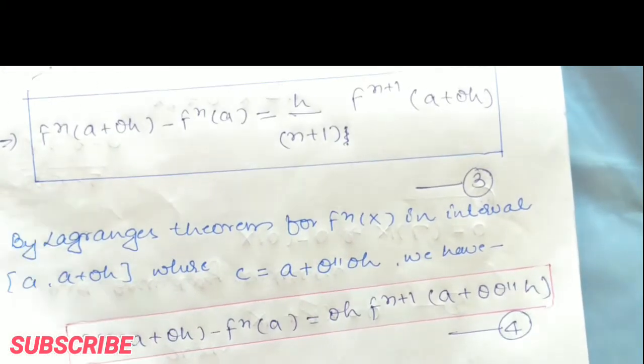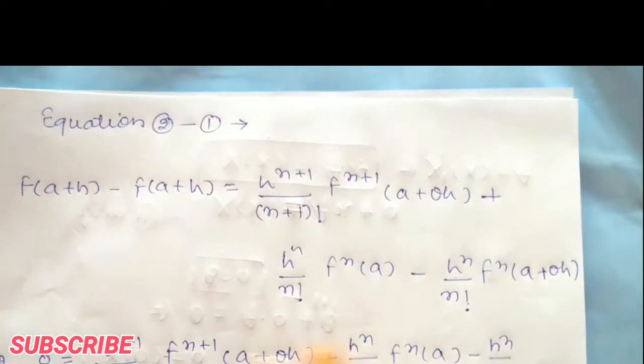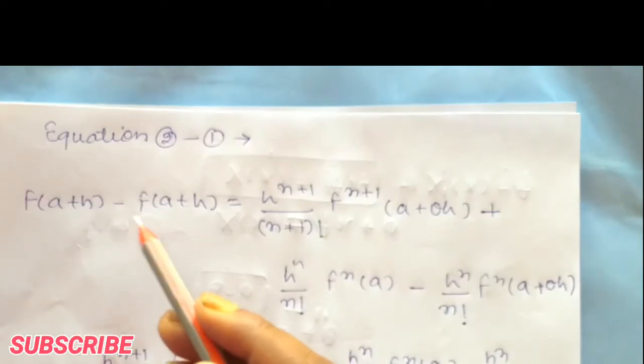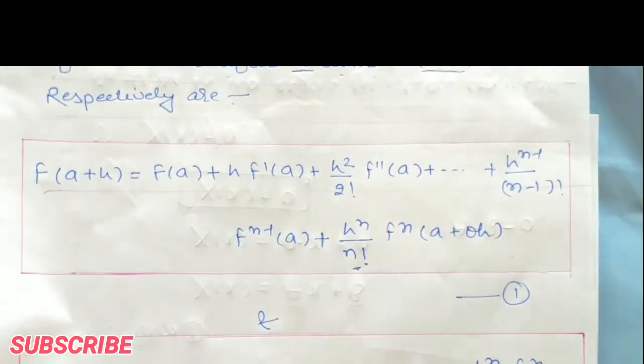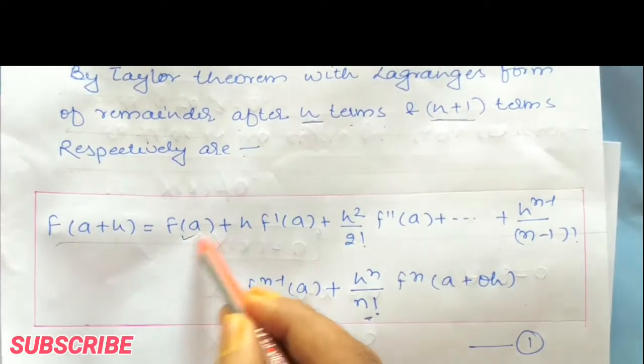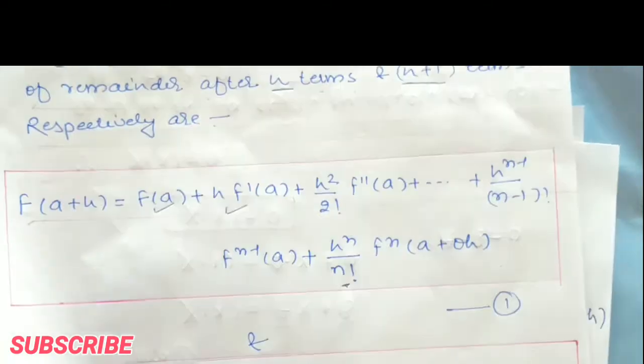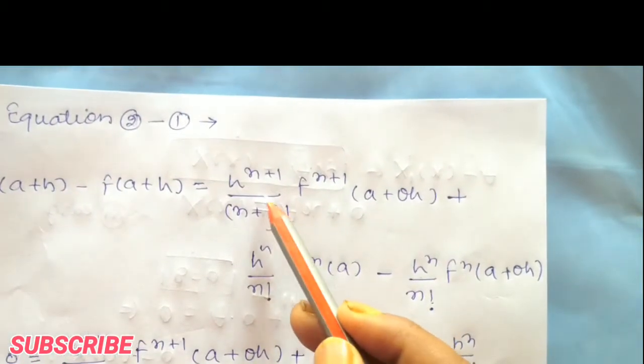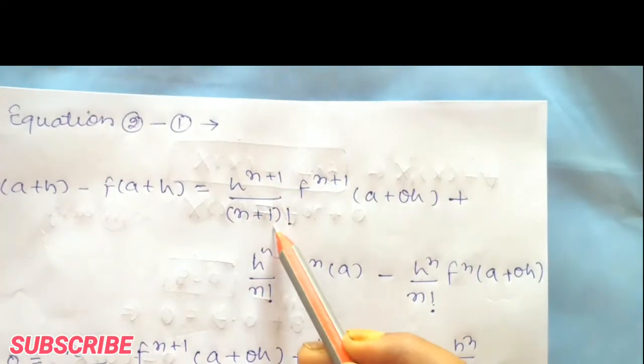In the next step, subtract equation 1 from equation 2. When we subtract, f(a+h) cancels from both sides. All common terms cancel out, and what remains is: h^(n+1)/(n+1)!·f^(n+1)(a + θ'h) + h^n/n!·f^n(a) − h^n/n!·f^n(a + θh).